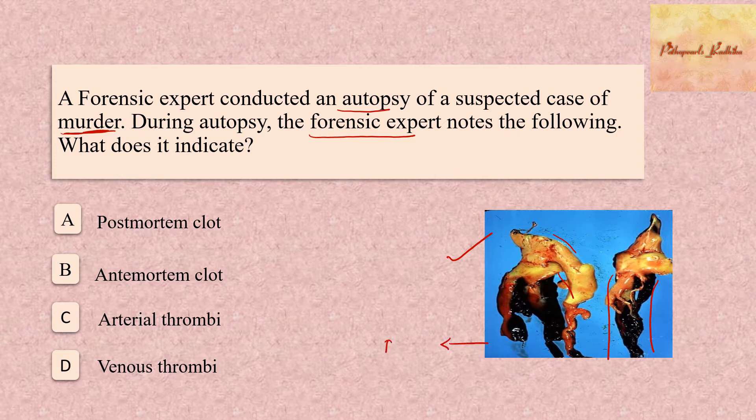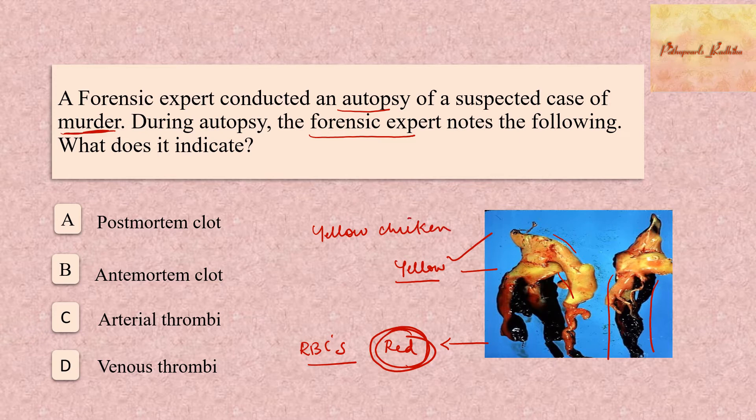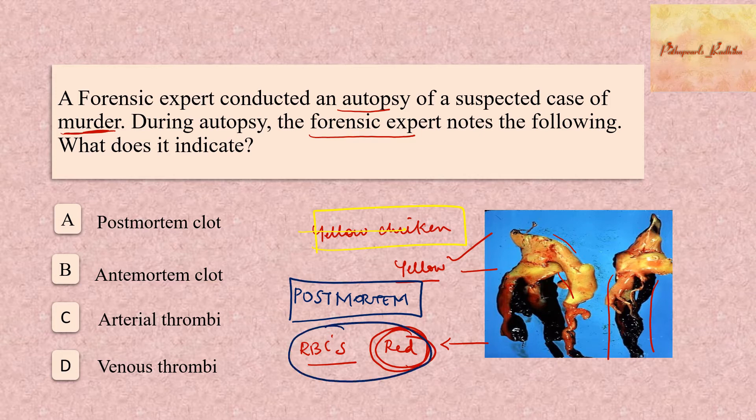At the bottom, you have a red color and on the top you have a yellow color. This red portion is the dependent part and it is red because of the RBCs. So you have basically a dependent portion which is red and a supernatant top part which is yellow in color. So this is called yellow chicken fat clot. And where do you see this yellow chicken fat clot? This is especially seen in a post-mortem clot. So whenever a clot forms in a blood vessel after the death of the patient, you have a dependent red part and a supernatant yellow part. So the answer here is a post-mortem clot.